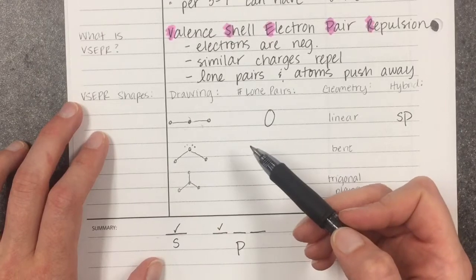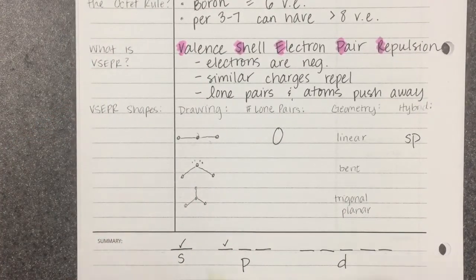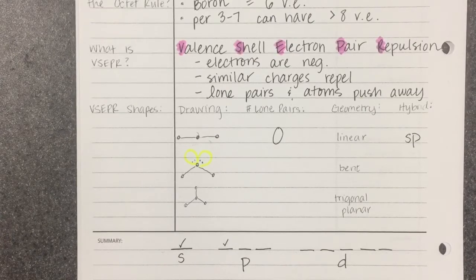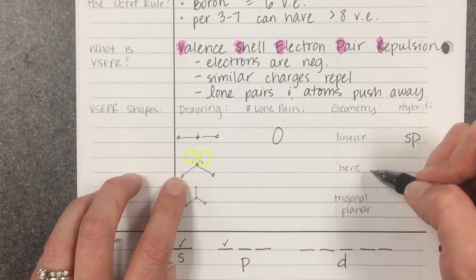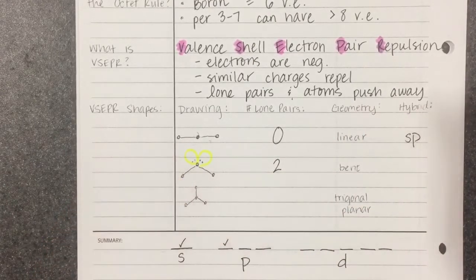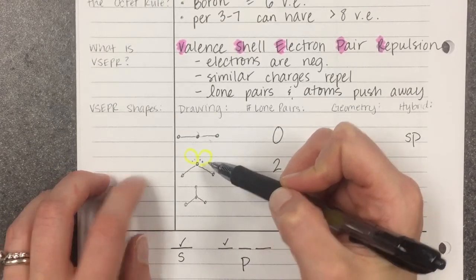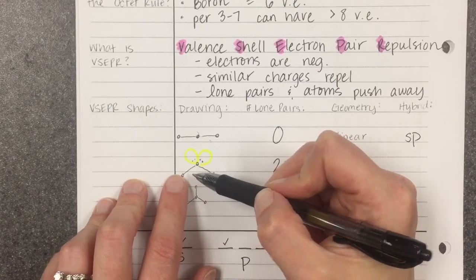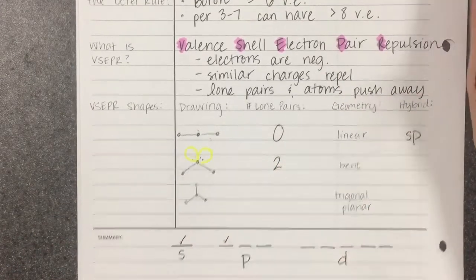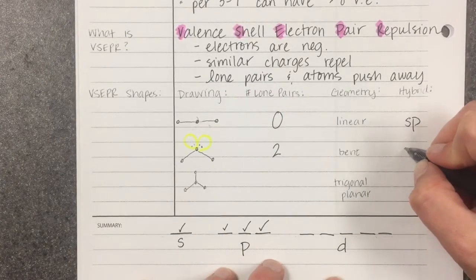Looking at this next one, it's still just three atoms — a central atom and two terminal atoms — but in addition, there are also two lone pairs of electrons. Those lone pairs push away from each other and also push away from the terminal atoms, bending the atoms downward. We call this shape bent. There are two lone pairs, each occupying an orbital from the central atom — one orbital for each lone pair and one orbital for each bond — using four orbitals total. So the hybridization of this one is SP3.